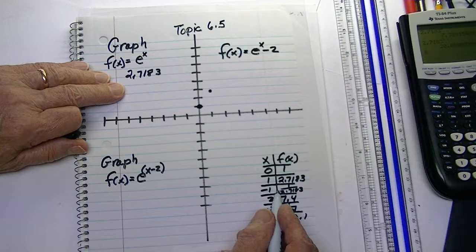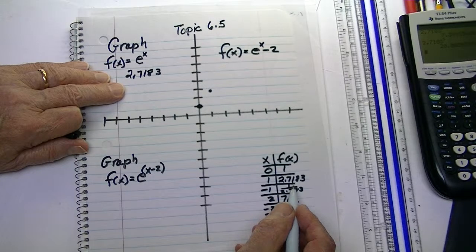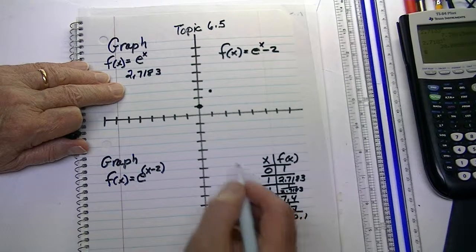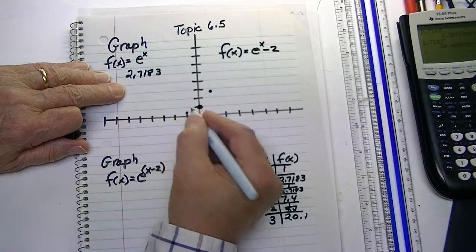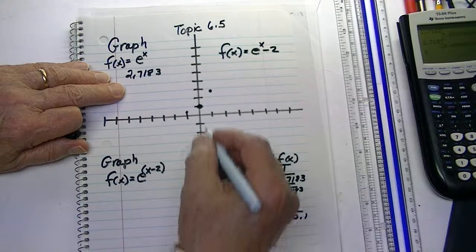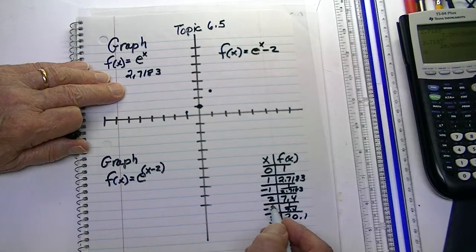And if it's a negative 1, it's about 1 over 3, so negative 1 is about a third, right there. You see, we're starting to get the curve here.